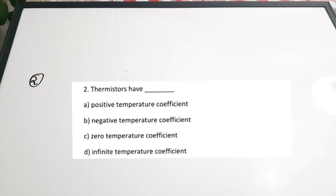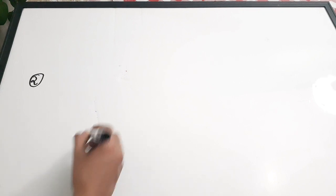Second question: 'Thermistors have dash.' Options: A) positive temperature coefficient, B) negative temperature coefficient, C) zero temperature coefficient, D) infinite temperature coefficient. Thermistors specifically have a negative temperature coefficient. If a device has a positive temperature coefficient, it is called a sensistor. Correct answer is option B.